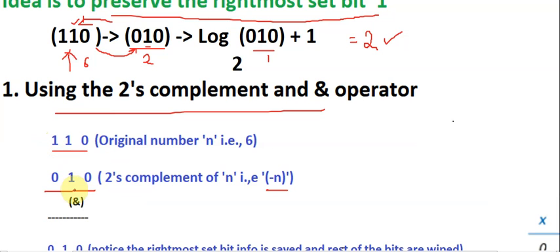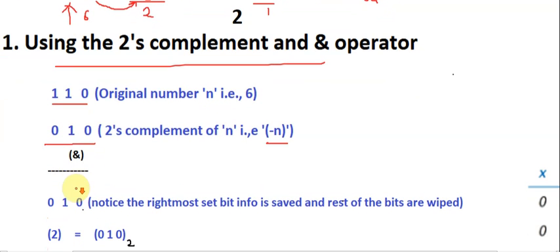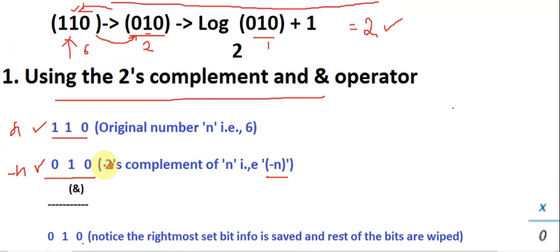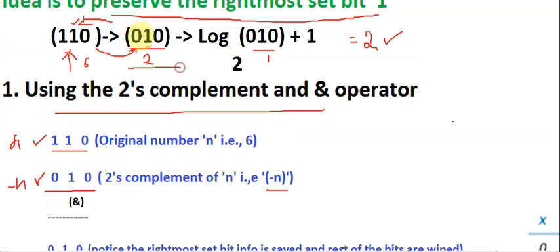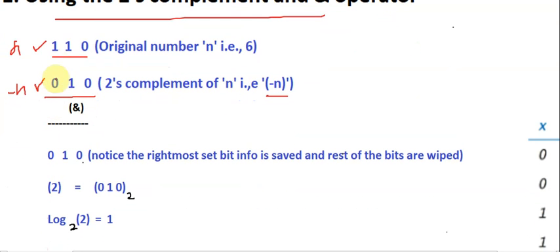The two's complement of six is, in base 10, the value two. Then we do the AND operation between the original number n and minus n. The AND operation results in one only when both bits are set to one. The result of AND between n and minus n gives us a value where the rightmost set bit is preserved and all other bits are wiped to zero.